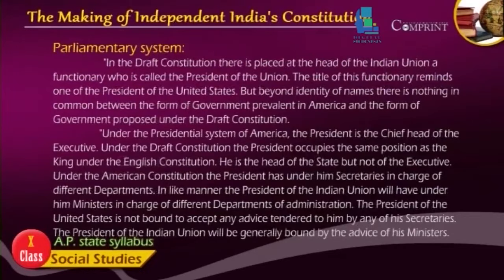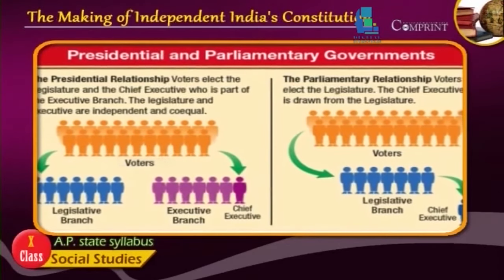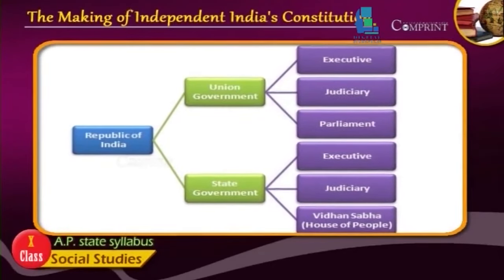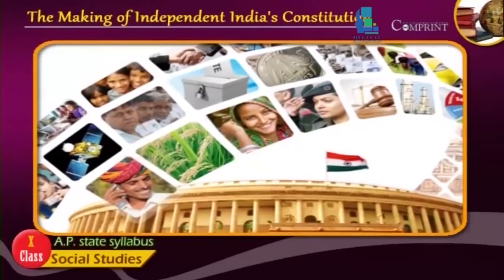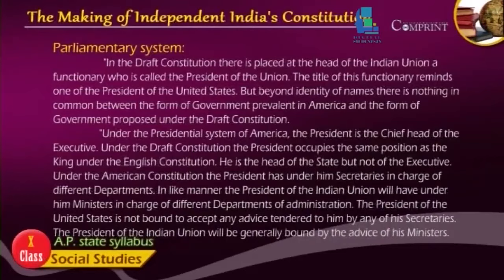Parliamentary System: In the draft constitution, there is placed at the head of the Indian Union a functionary who is called the President of the Union. The title of this functionary reminds one of the Presidents of the United States. But beyond the identity of names, there is nothing in common between the form of government prevalent in America and the form proposed under the draft constitution. Under the presidential system of America, the President is the chief head of the executive and the administration is vested in him. Under the draft constitution, the President occupies the same position as the King under the English constitution — he is the head of the executive.